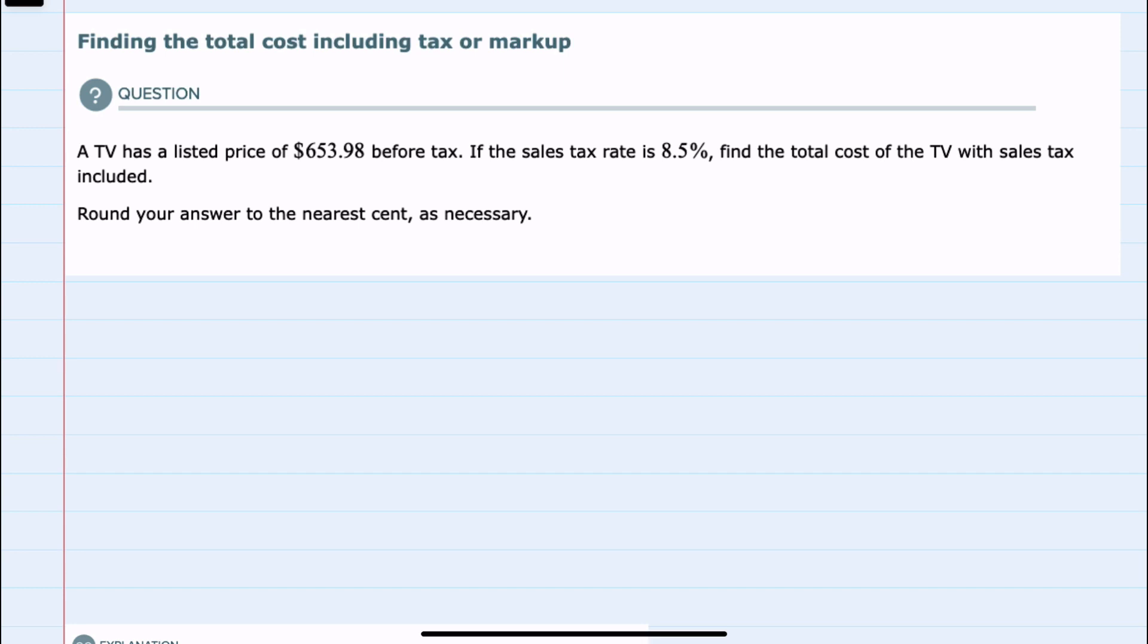We're told that a TV has a list price of $653.98 before tax, and the tax rate is 8.5%. We're asked to find the total cost, or the total price,